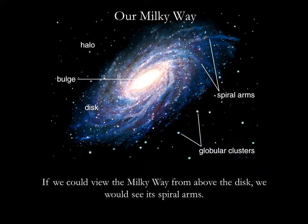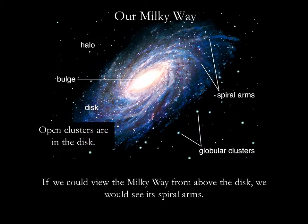Now let's look at how these two types of clusters fit into the Milky Way. We've never been able to get outside of our galaxy to take an overhead image — it's simply too enormous. But if we could, it would look something like this figure. The spiral arms are part of a fairly flat disk of stars surrounding a bright central bulge. The entire disk is surrounded by a dimmer, rounder halo. Open clusters are found in the disk, and globular clusters are found in the halo.